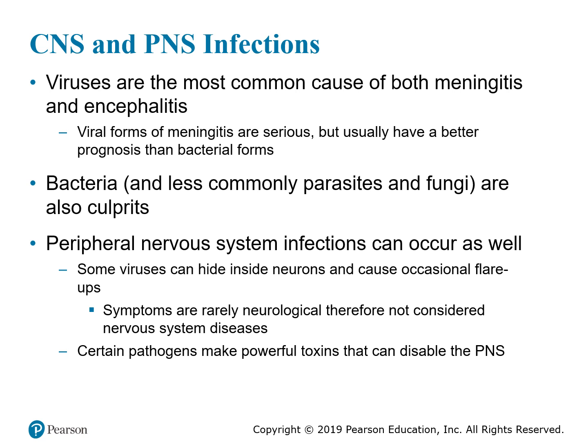Peripheral nervous system infections are not as common. This is where viruses hide inside neurons and cause flare-ups of infection. Symptoms are rarely neurological, so they are not typically considered nervous system infections in the traditional sense. With peripheral nervous system infections, pathogens produce toxins that cause issues within the peripheral nervous system.